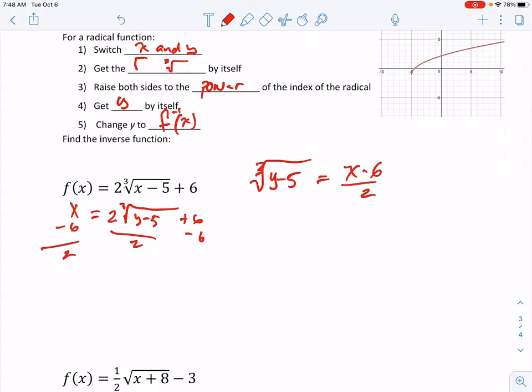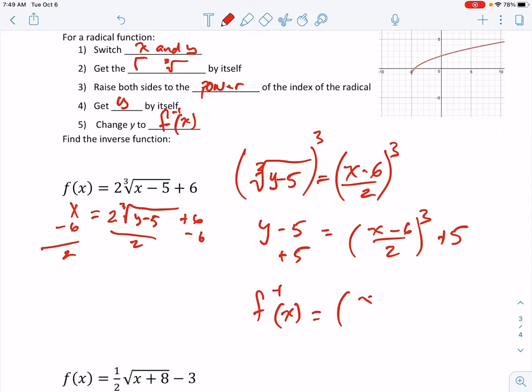Because we're to the third root, we're going to raise both sides to the third power. So now we have y take away 5, is equal to this fraction x minus 6, divided by 2 cubed. And we add 5, then change y to f inverse. So f inverse of x is equal to x minus 6 over 2 cubed plus 5.